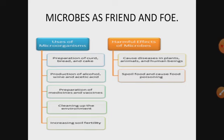Good morning learners. Today we will study further about microbes as our friend and foe. With the help of this concept map, I have tried to make you understand how microorganisms are sometimes useful and at the same time harmful. On the first side, the uses of microorganisms are shown: making curd, bread, cake, acid, alcohol, wine, vaccines, medicines, antibiotics, cleaning up of the environment, and increasing soil fertility. These are some of the uses — you can add more.